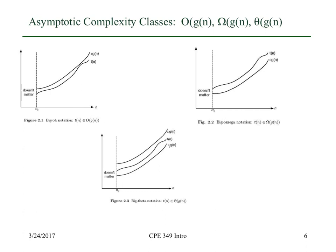Big omega is basically a lower bound past some certain point, n sub 0, and that number can certainly vary depending on the algorithm. So c times g of n is below the number of instructions. Both of these are sort of bounds — for big O of n, t of n could be way down here; it tells you an upper bound but doesn't tell you how much faster it may be. If you want both an upper bound and a lower bound, that's big theta of g of n. The number of instructions past a certain problem size is bounded above by some c1 times g of n and bounded below by some c2 times g of n.